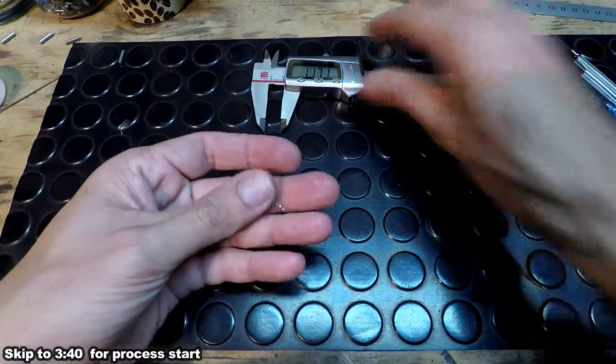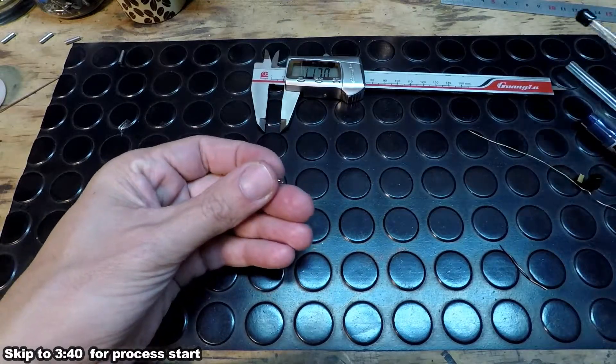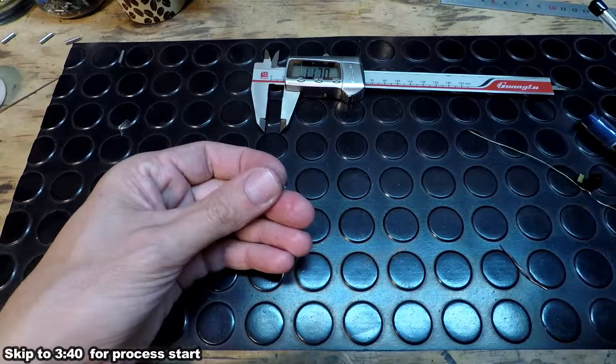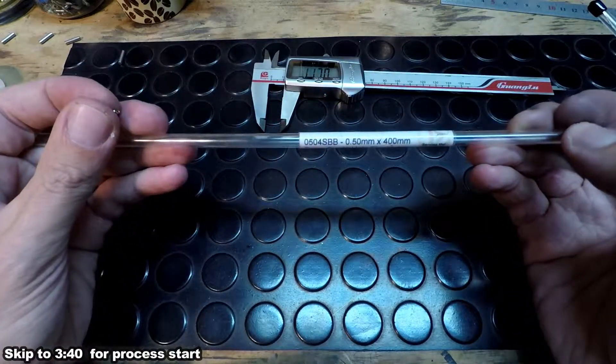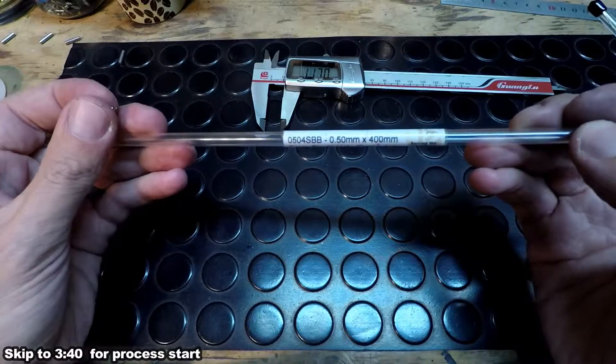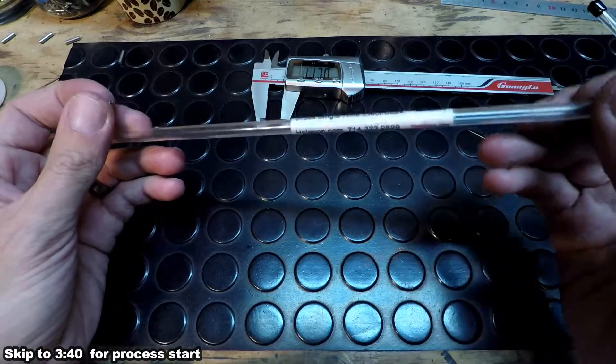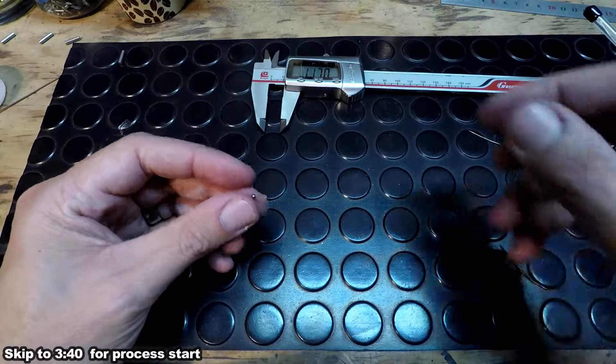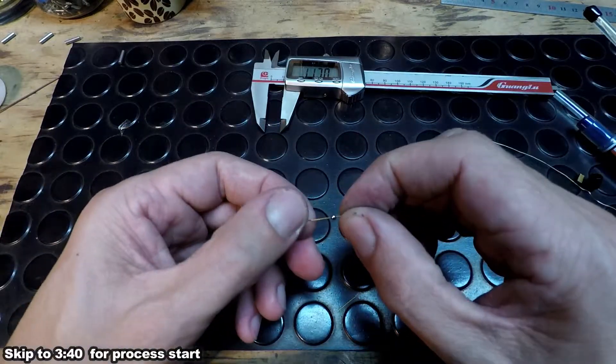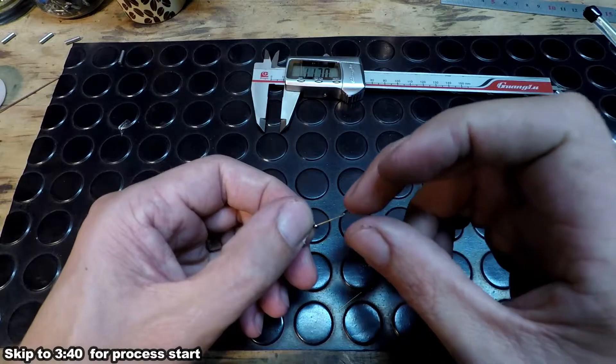This little electrode is part number 0.504 SPB, 0.5 mm by 400 from Hole Pump. This is a single channel electrode so it does have a little channel for flushing inside.